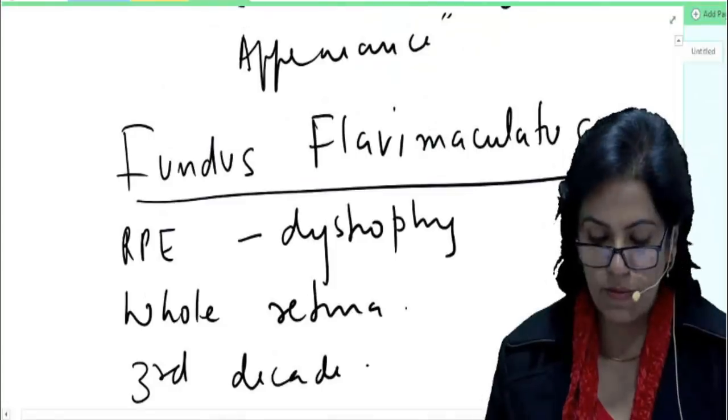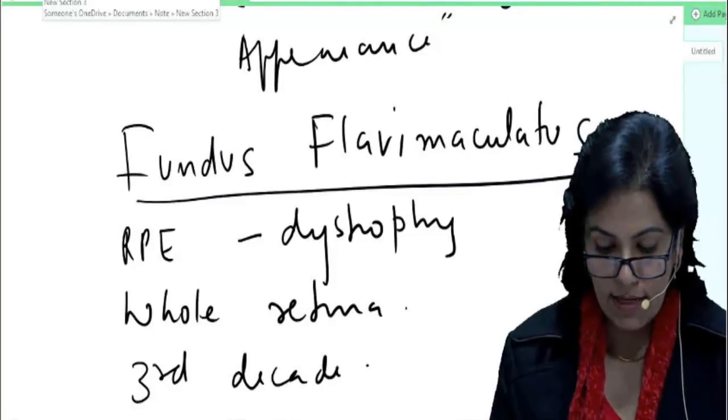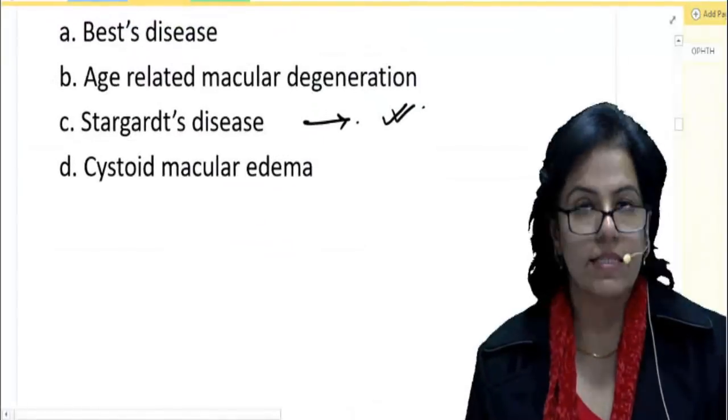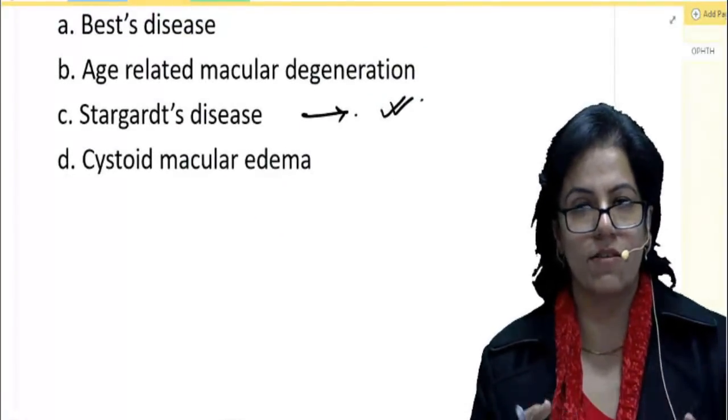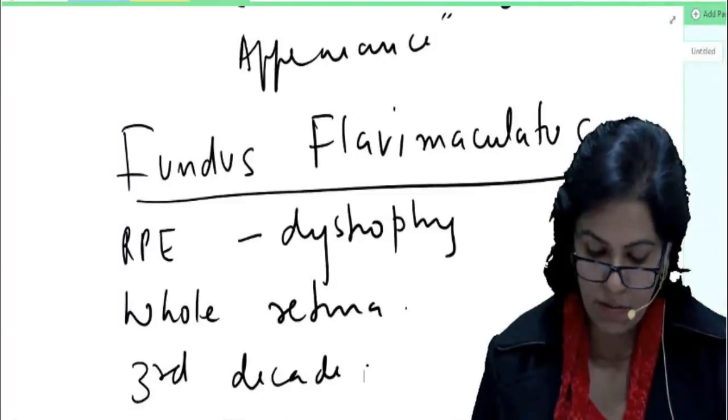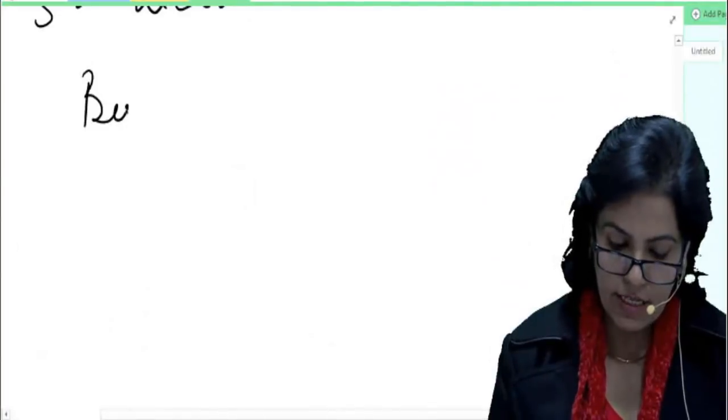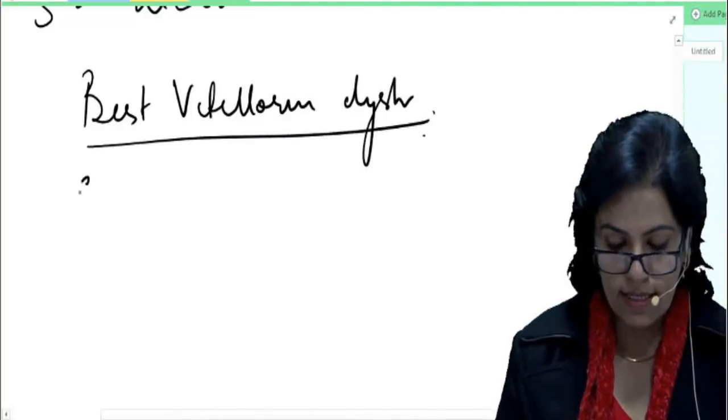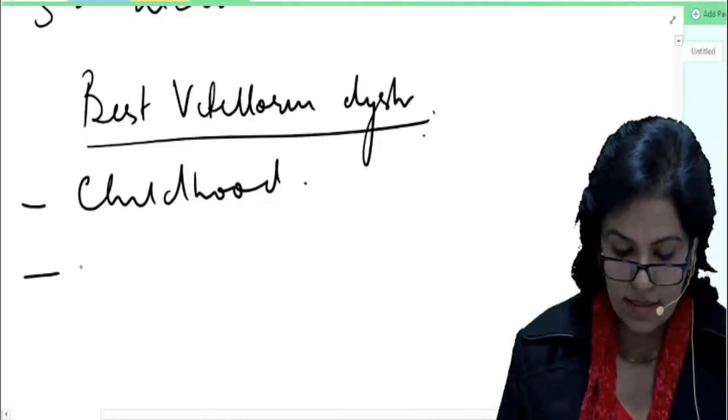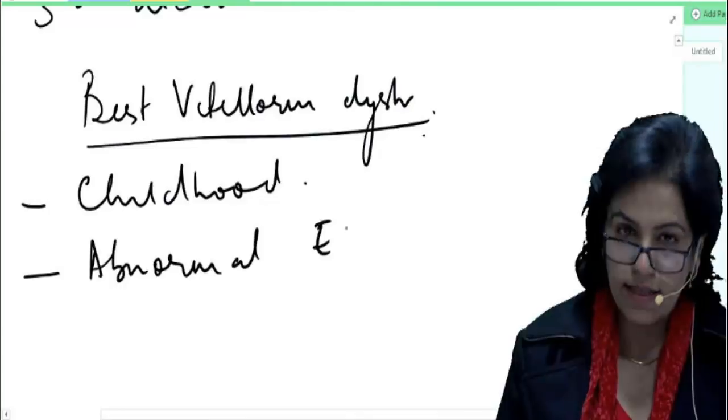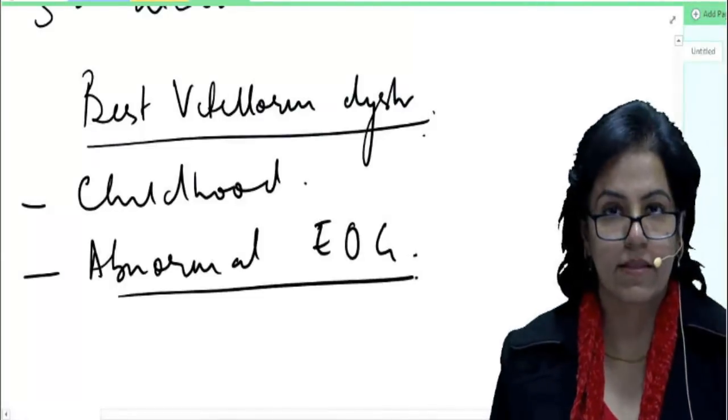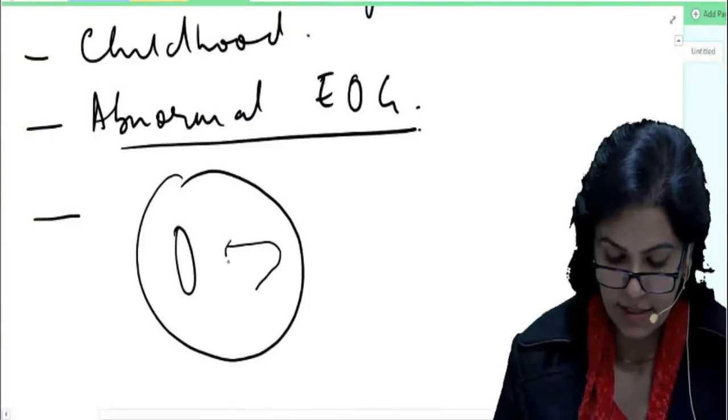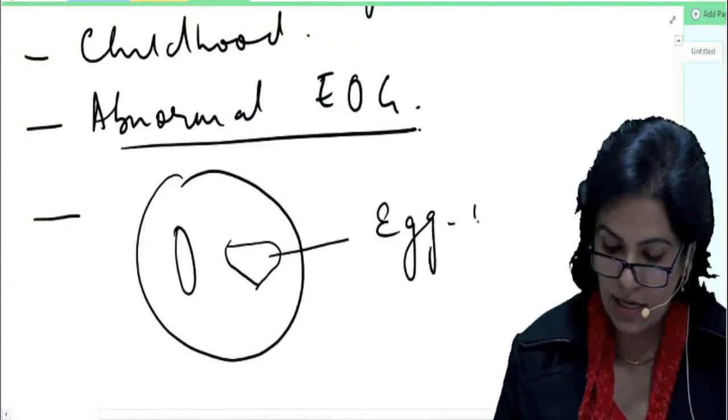Let's look at the other options of the question. Coming to Best disease—what is Best disease? It is again a dystrophy of retinal pigment epithelium. We call it Best vitelliform dystrophy. Again manifests in childhood. The disease starts with abnormal electrooculogram. Later the deposition of lipofuscin is causing an egg yolk appearance. Typically, the macular change is described as egg yolk appearance.